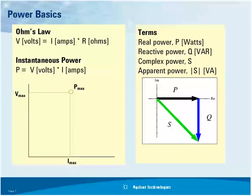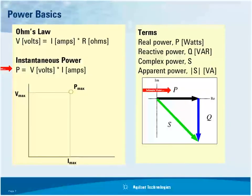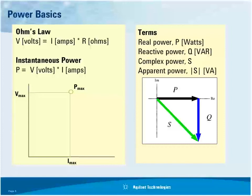Some basics when it comes to power: Ohm's law — volts equals amps times resistance. Instantaneous power equals volts times current. We can combine these: power equals I² times R. There's also real power, reactive power — since power supplies can have inductive and capacitive elements — measured in volt-amp reactance. Then there's complex power and apparent power, which is the absolute value of complex power measured in volt-amps, representing the vector sum of real and reactive power.